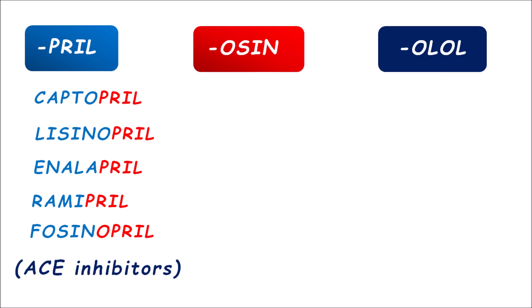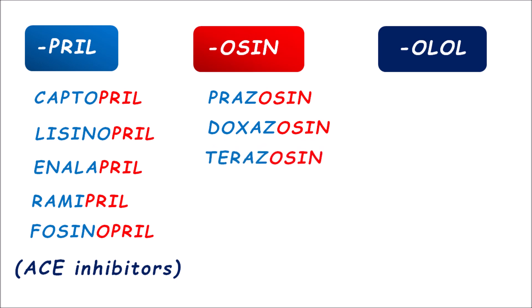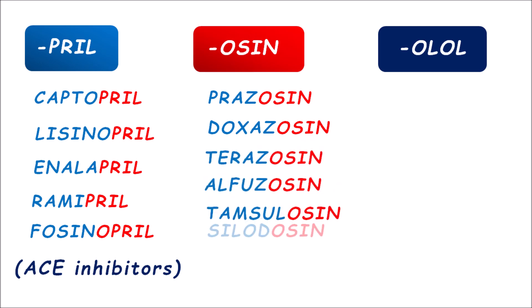Since angiotensin II is a potent vasoconstrictor, when its synthesis is inhibited, vasoconstriction is inhibited and blood pressure is reduced. The drugs ending with -OSIN include prazosin, doxazosin, terazosin, alfuzosin, tamsulosin, and silodosin — all having the suffix -osin and classified as alpha-1 blockers.